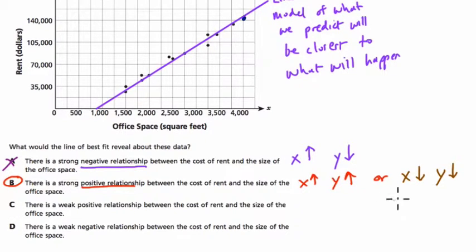Now a weak positive and negative relationship. This is not weak because we can tell the space between the points and the line, it's pretty minimal. A weak correlation or weak relationship, the points would be more spread out. Let me show you what that will look like. So this is not what we have.